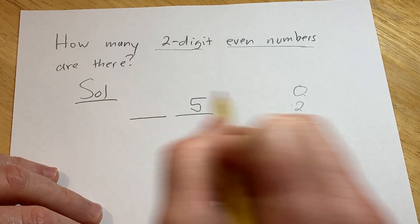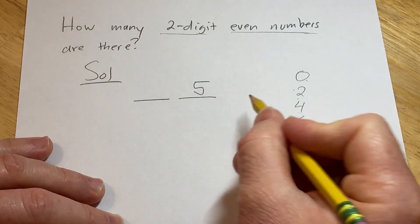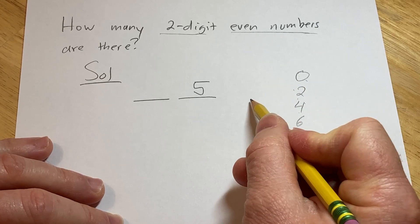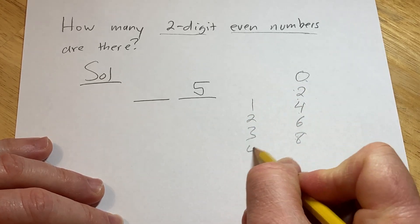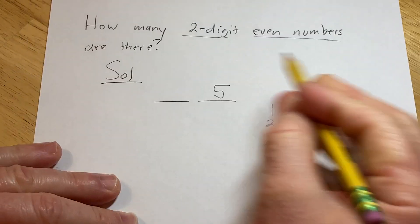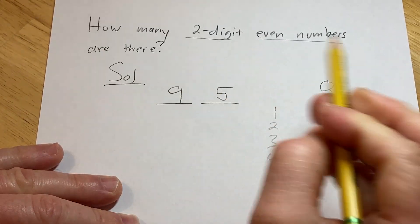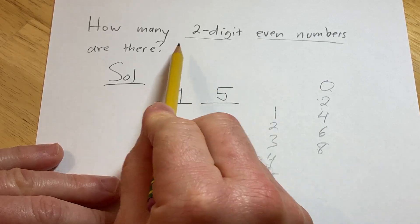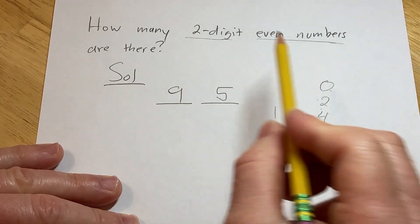And how many ways can we pick the first digit? Well, for the first digit, zero is not a choice. So we simply have one, two, three, four, five, six, seven, eight, and nine. So we have nine choices for the first digit.